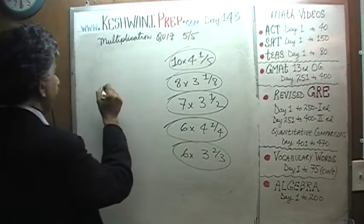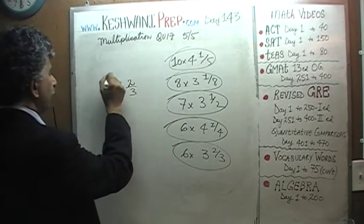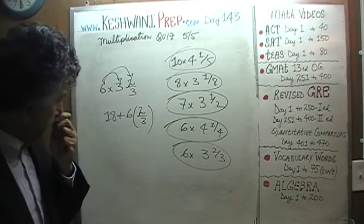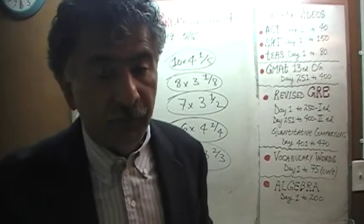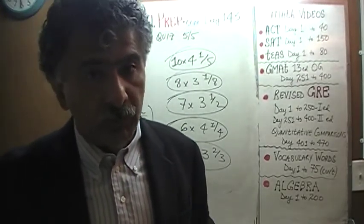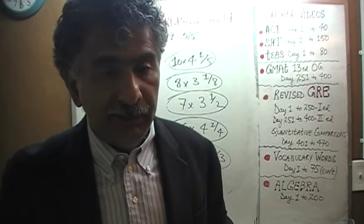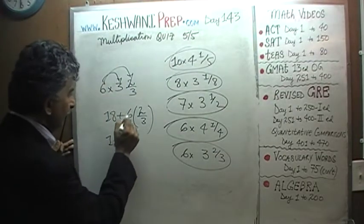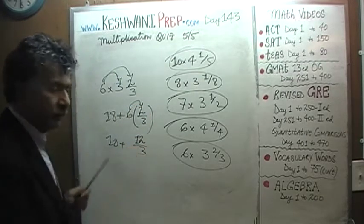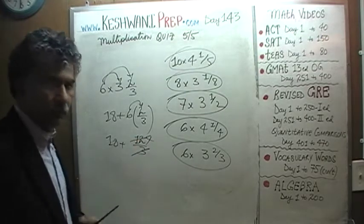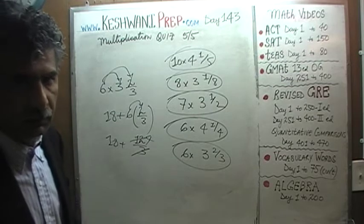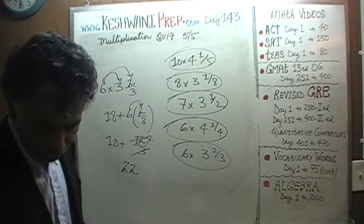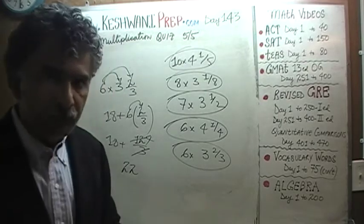The last one: six times three and two thirds. Six times three is eighteen, and six times two thirds: it's six times two, which is twelve thirds. Twelve thirds is four, because three thirds make one. So eighteen plus four is twenty-two. I'll see you tomorrow — try now!